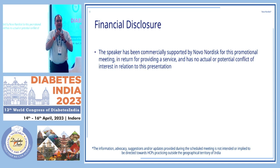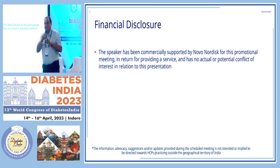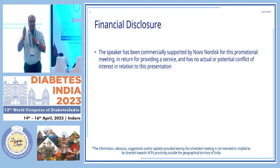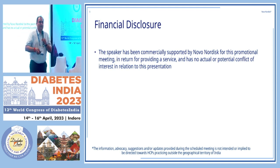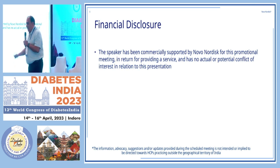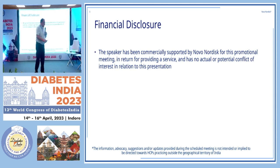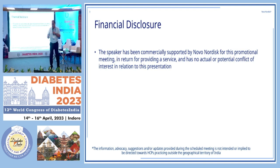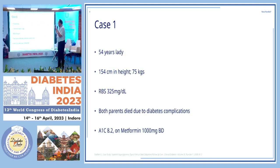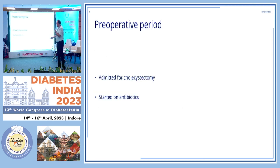We will take it to a couple of case scenarios. We're all aware that once a patient gets admitted to the hospital, management is different. I'm not talking about critical care — in critical care, we know it's IV infusion. Non-critical care, meaning patients are in the wards — how do we manage hyperglycemia there? Case one: a 54-year-old lady, 154 centimeters, 75 kg, RBS 325. Both parents died due to diabetes complications. A1C 8.2 on metformin, admitted for cholecystectomy, started on antibiotics.